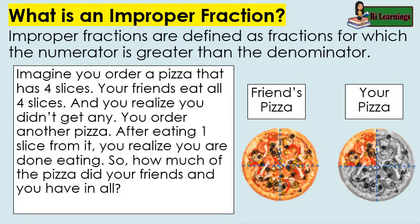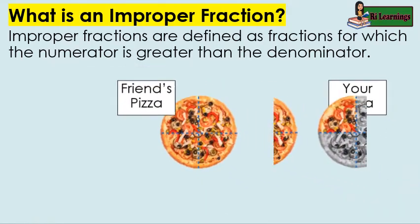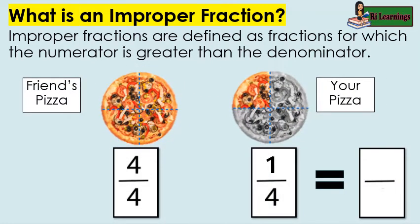So, how much of the pizza did your friends and you have in all? Your friends first had all four slices of one pizza, and then you had one slice of the same size from the second pizza. Let's count all the eaten pizza: one, two, three, four, five. Five will be the numerator. Then there are four parts in one whole pizza, so four will be the denominator. The total pizza eaten is five fourths slices of pizza, and that's an improper fraction with a numerator greater than the denominator.